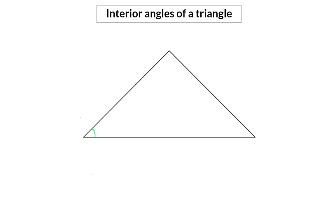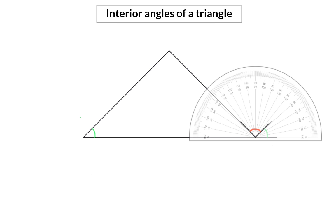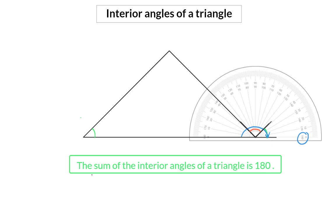The three interior angles of a triangle have an interesting property. When you put them all together, they will form a perfect straight line, and a straight line like this will always be 180 degrees. This means that we can conclude that the sum of the interior angles of any triangle will always be equal to 180 degrees.